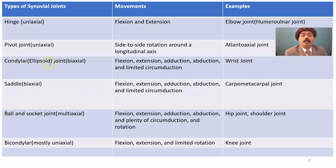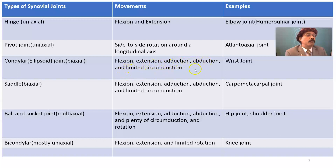Condylar or ellipsoid joint has biaxial movement: flexion, extension, adduction, abduction, and limited circumduction. Example: wrist joint.